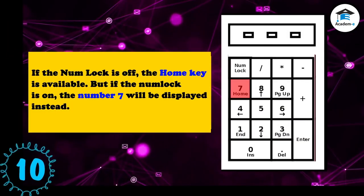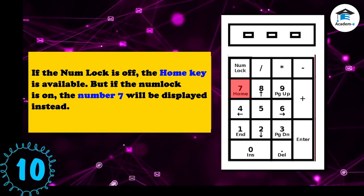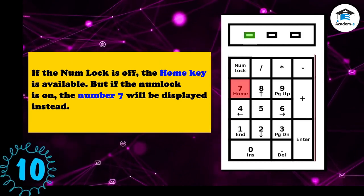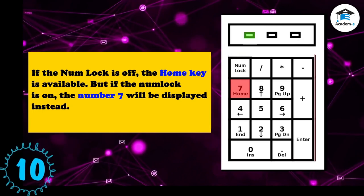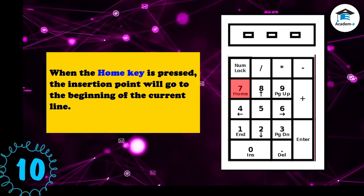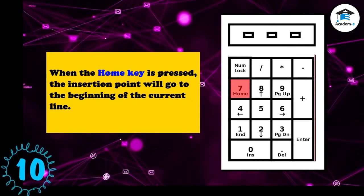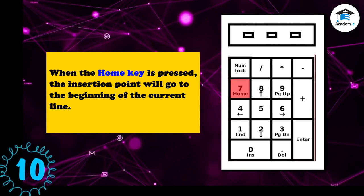If the Num Lock is off, the Home key is available, but if the Num Lock is on, the number seven will be displayed instead. When the Home key is pressed, the insertion point will go to the beginning of the current line.